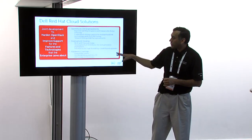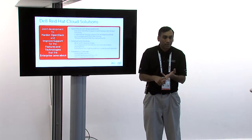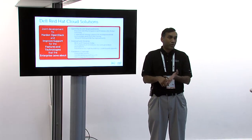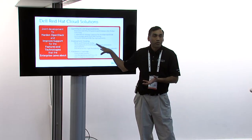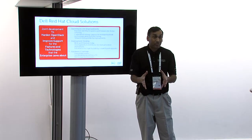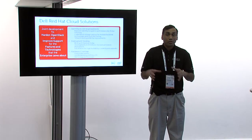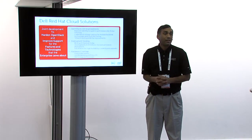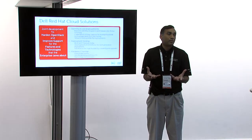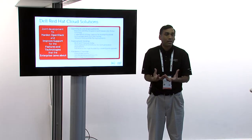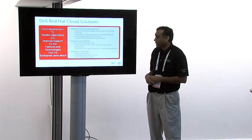We also have engineering resources working on TripleO and Ironic for next-generation deployment. We're also looking at automated high availability deployments, scalability, and upgrades — all pain points we're aware of today. It's not just OpenStack itself; you have Ceph, the installer pieces, OSP, and HA. All of these pieces have to work together, be deployed together, tested together, and validated together — that's what we're working on for deployment tooling.